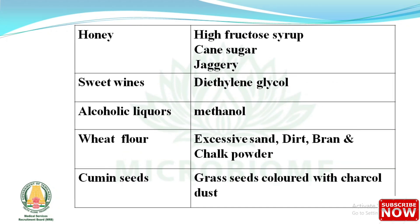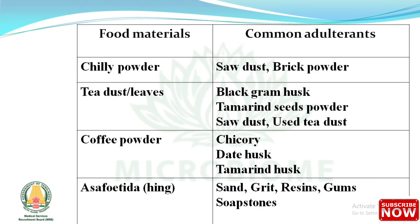Further common adulterants: In honey — high fructose syrup, cane sugar, and jaggery. In sweet wines — diethylene glycol. In alcoholic liquor — methanol. In wheat flour — excessive sand, dirt, bran, and chalk powder. In cumin seeds — grass seeds colored with charcoal dust. In chili powder — sawdust and brick powder. In tea dust or leaves — black gram husk, tamarind seeds powder, and sawdust. In coffee powder — chicory, date husk, and tamarind husk. In asafoetida (hing) — sand, grit, resins, gum, and soapstones.